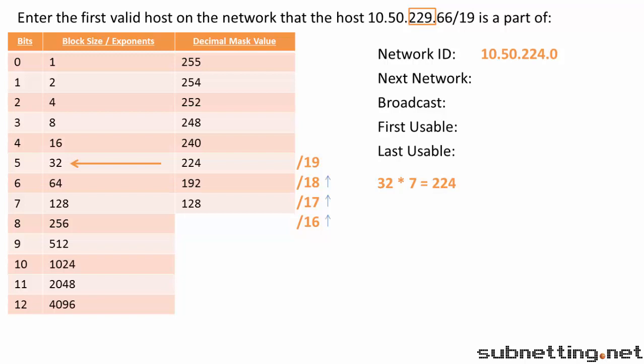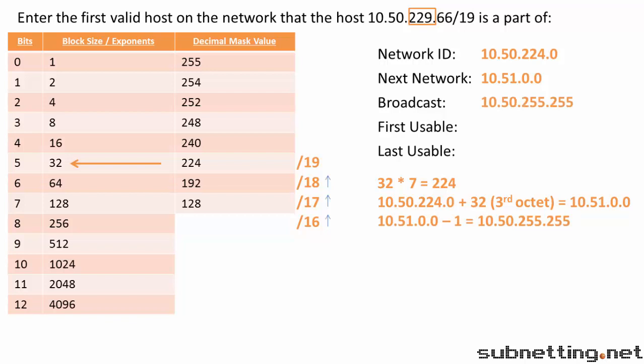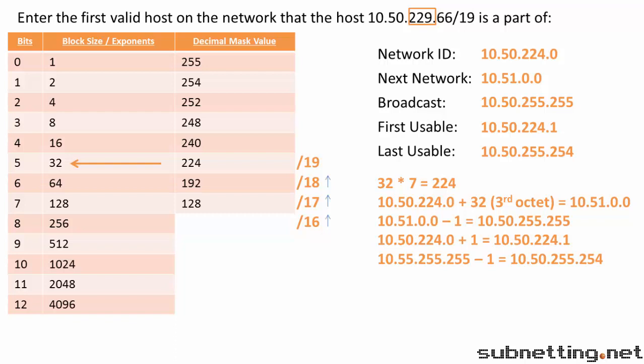To find the start of the next network, we add the block size of 32 to our third octet, and we get 10.51.0.0. Remember in lesson 3, we showed you how to count IP addresses — whenever we get to 256, we have to increment the octet to the left by 1. Now from here, we subtract 1 from the next network ID to get our broadcast address, add 1 to our network ID to get the first usable host, and then subtract 1 from our broadcast address to get the last usable host. The answer to our question — the first valid host — would be the first usable: 10.50.224.1.